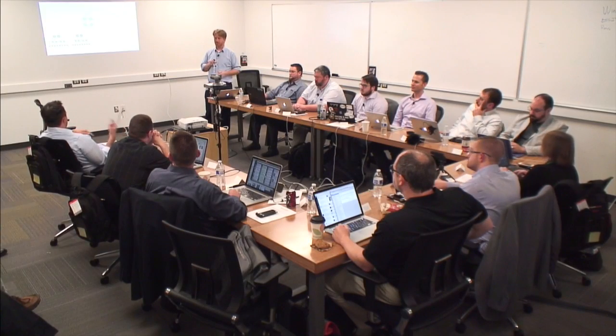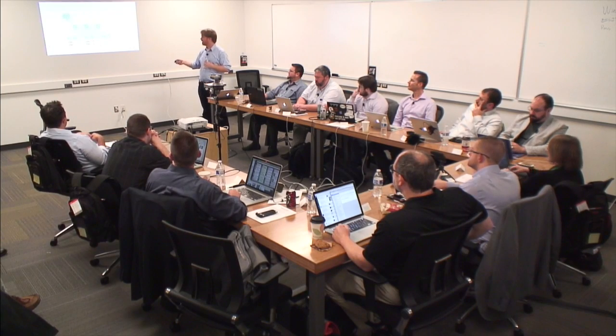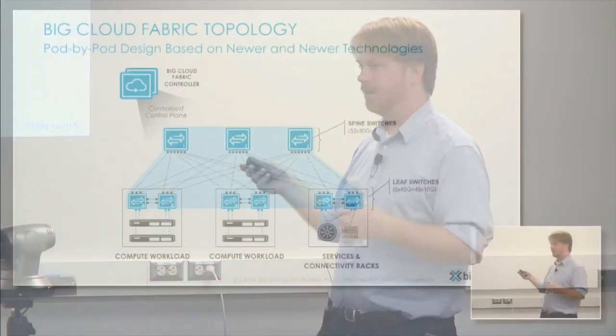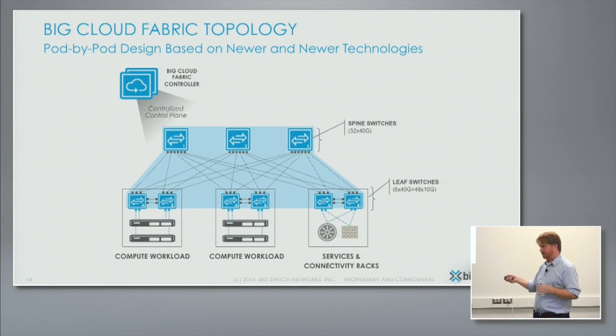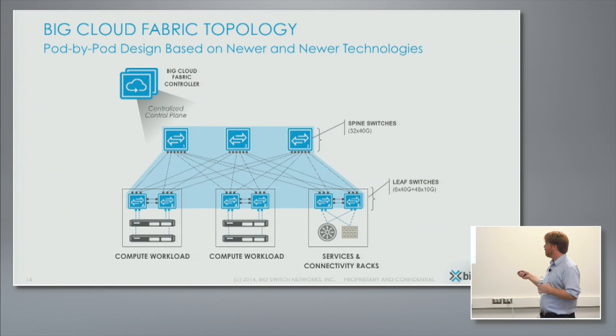Let's go to this picture, because I think it gets exactly to what you're asking. The limit on pod size is not our software at all — it's the Broadcom hardware. Each leaf has six 40-gig uplinks, so you can have a maximum of six spines. In a leaf-spine fabric, every leaf must connect to every spine, so that gets you a maximum of 32 leafs connecting to a spine, since the spines only have 32 links. That falls directly out from the hardware, not our limit.